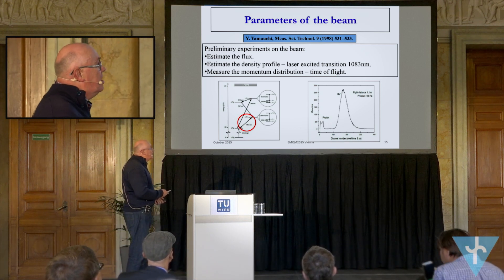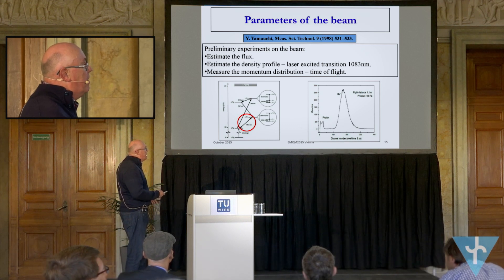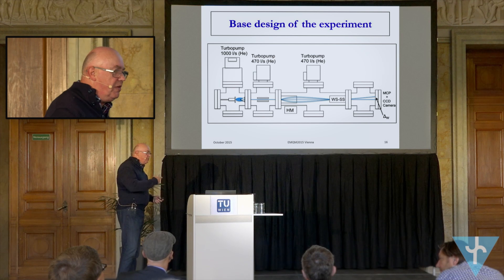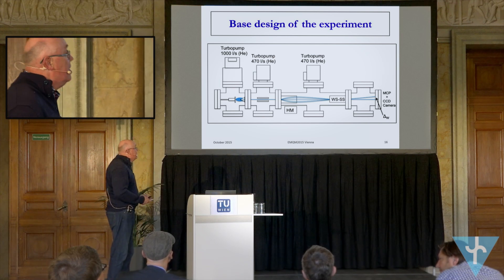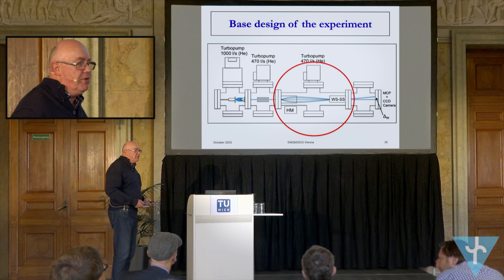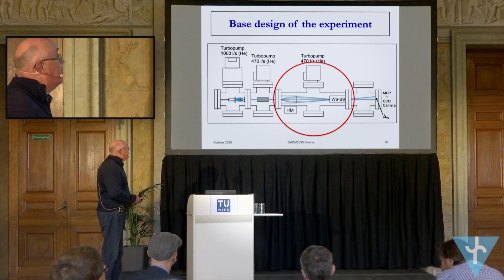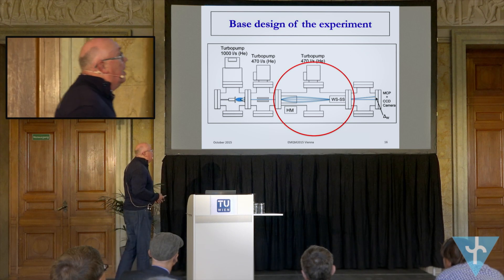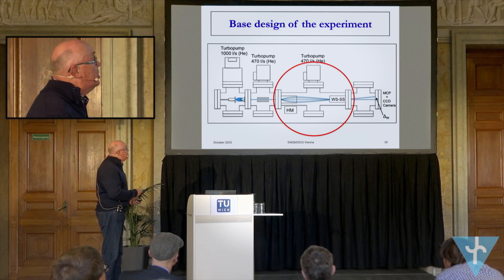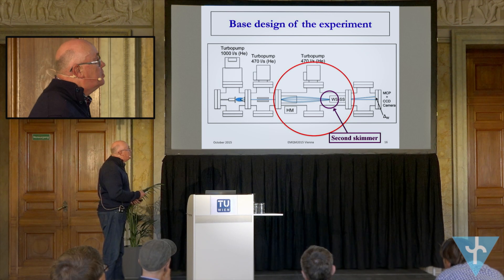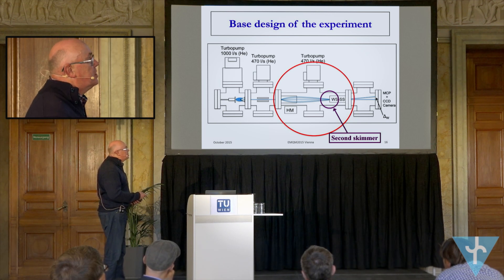We've done a lot of that work and we're going to finish it off, hopefully this year. Then we want to move on to the next stage where all the action happens. The first thing we want to do is put in what's called a hexapole magnet, which will focus the beam onto another skimmer. Then the resulting beam from that will go through the weak stage and the strong stage, and eventually we'll have some sort of detection system.